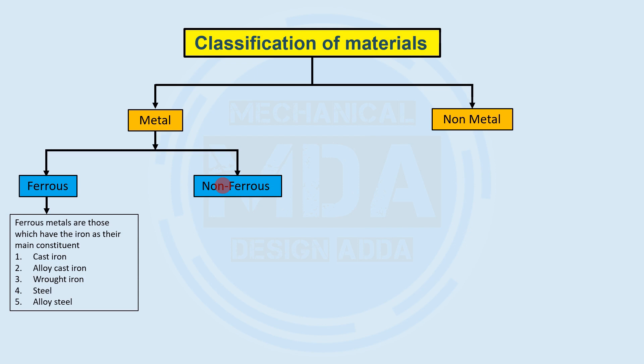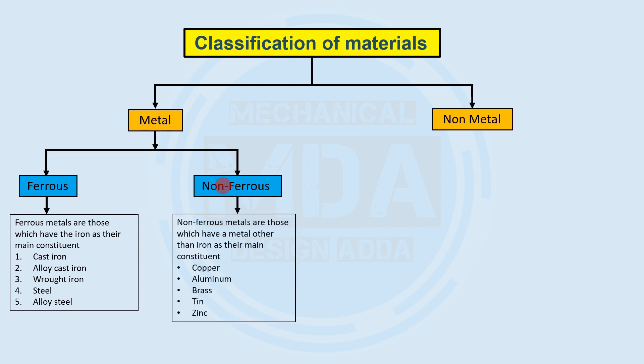Within ferrous materials, there are different types of cast iron, different types of alloy cast irons, and different types of steels — such as medium carbon steel, high carbon steel, and alloy steels. These all come under ferrous materials.